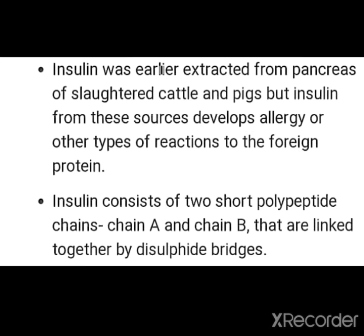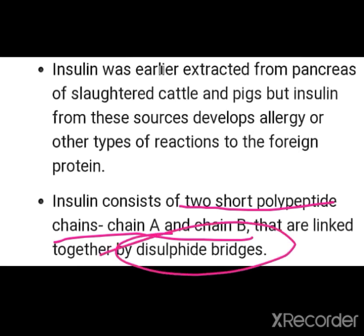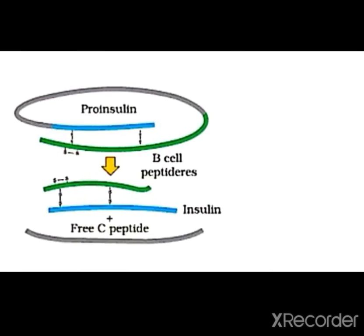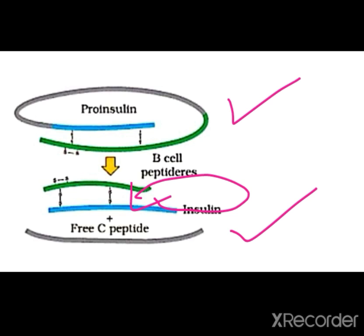If we talk about the structure of insulin, it consists of two short polypeptide chains: chain A and chain B, linked to each other with the help of disulfide bonds. You can see in the structure that this is pro-insulin — the immature form — in which we can see three chains: A chain, B chain, and C chain. But when it converts to the mature form, the C chain separates and just chain A and chain B remain, representing mature insulin.